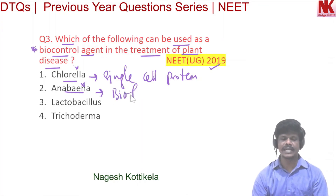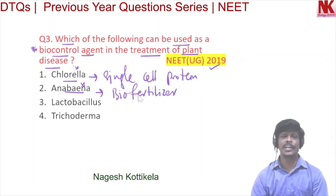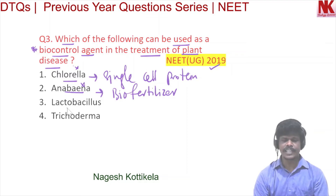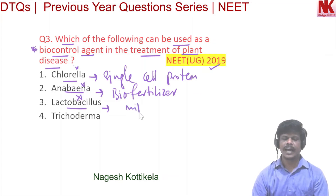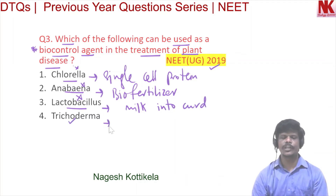Anabaena fixes atmospheric nitrogen. The third option is Lactobacillus — this is also wrong because Lactobacillus is found in milk and it converts milk into curd. The fourth option is Trichoderma — this is correct. Trichoderma is found in root ecosystems.